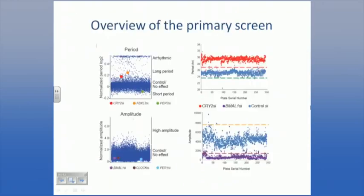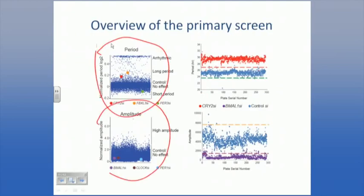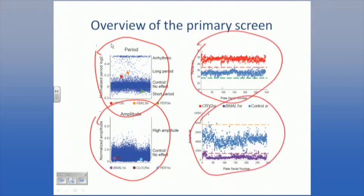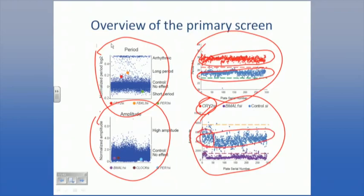Here's an overview of the primary screen. On the left-hand side is all the data fitted for period length or amplitude. On the right-hand side is a plate-level view of period and amplitude with controls. Here's the normal period of the clock around 24 hours, and here's a gene that makes the clock a long period - the positive control CRY2. You can see that across most plates, CRY2 was included as a control and gave the appropriate result. Similarly for amplitude - here's the amplitude across the screen. The first few plates had something a little unusual, but then it became more stable. The amplitude control BMAL1 looks pretty good.